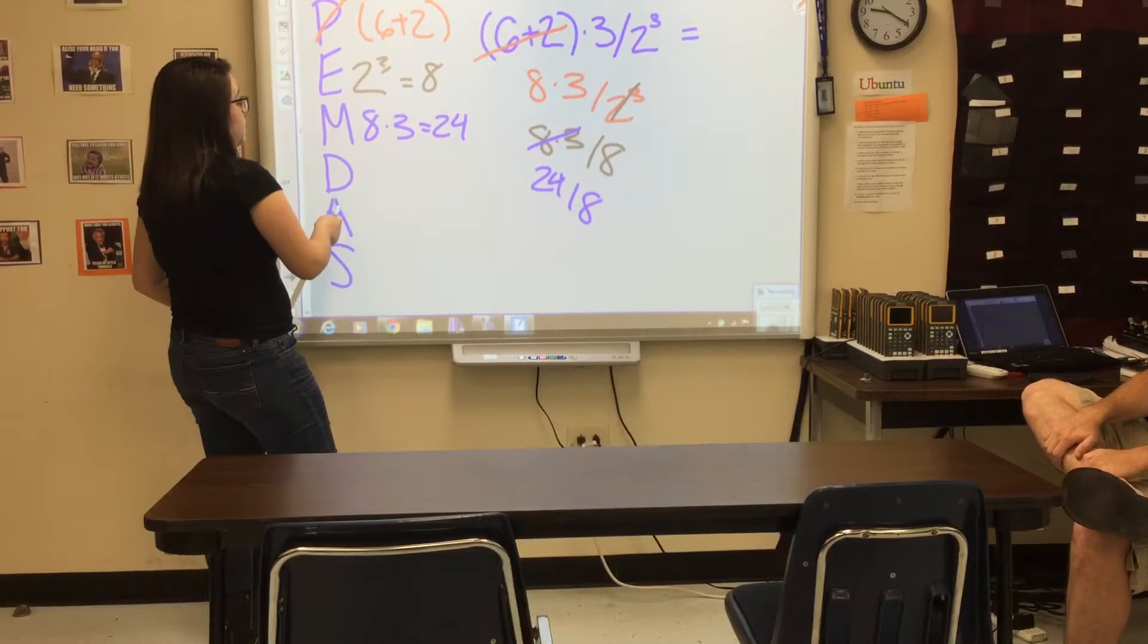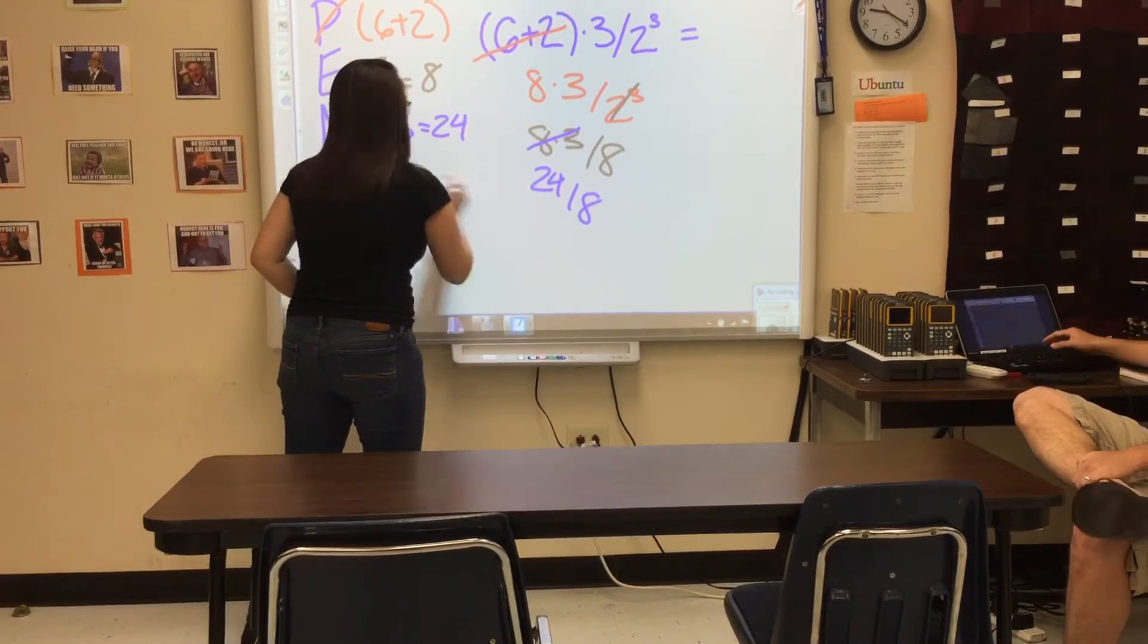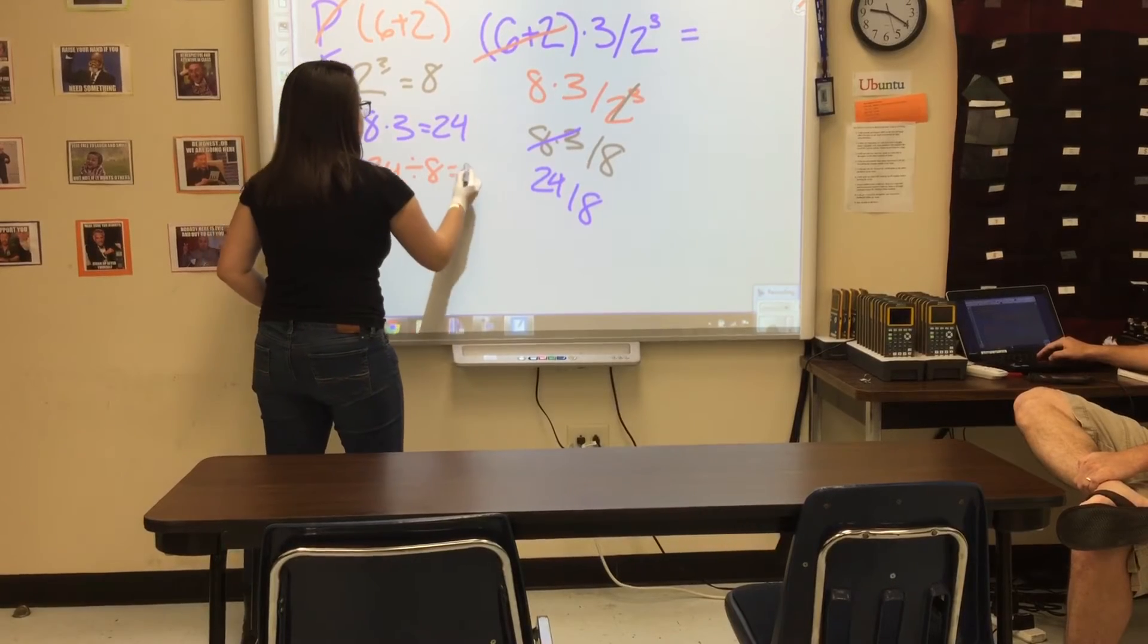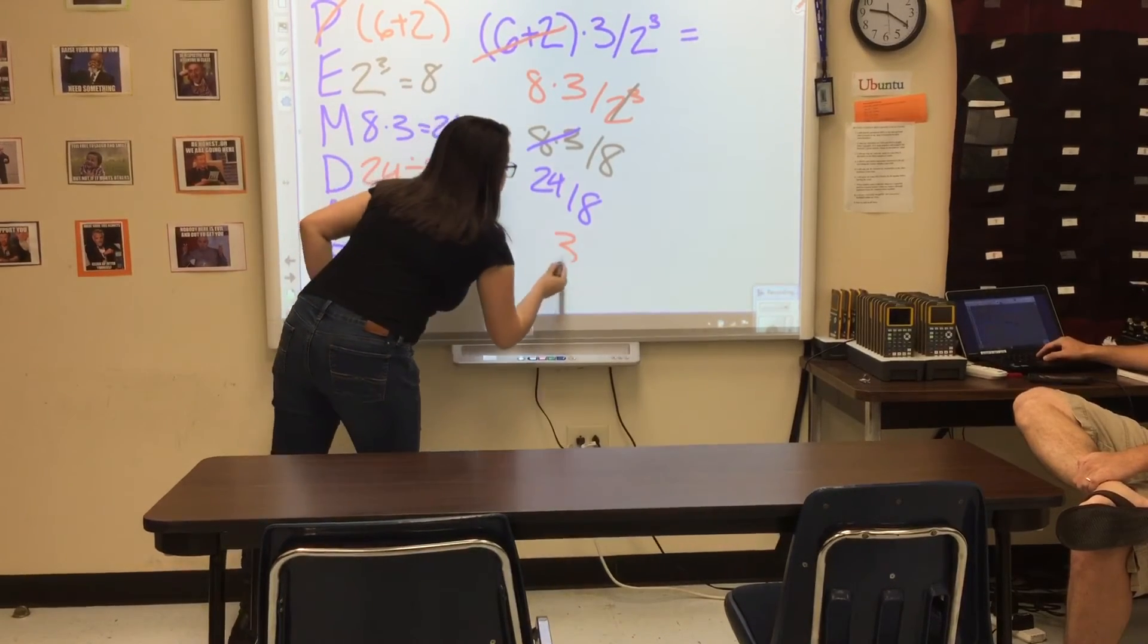And then next is division, so we're going to have 24 divided by 8. That's going to equal 3, so your final answer will be 3.